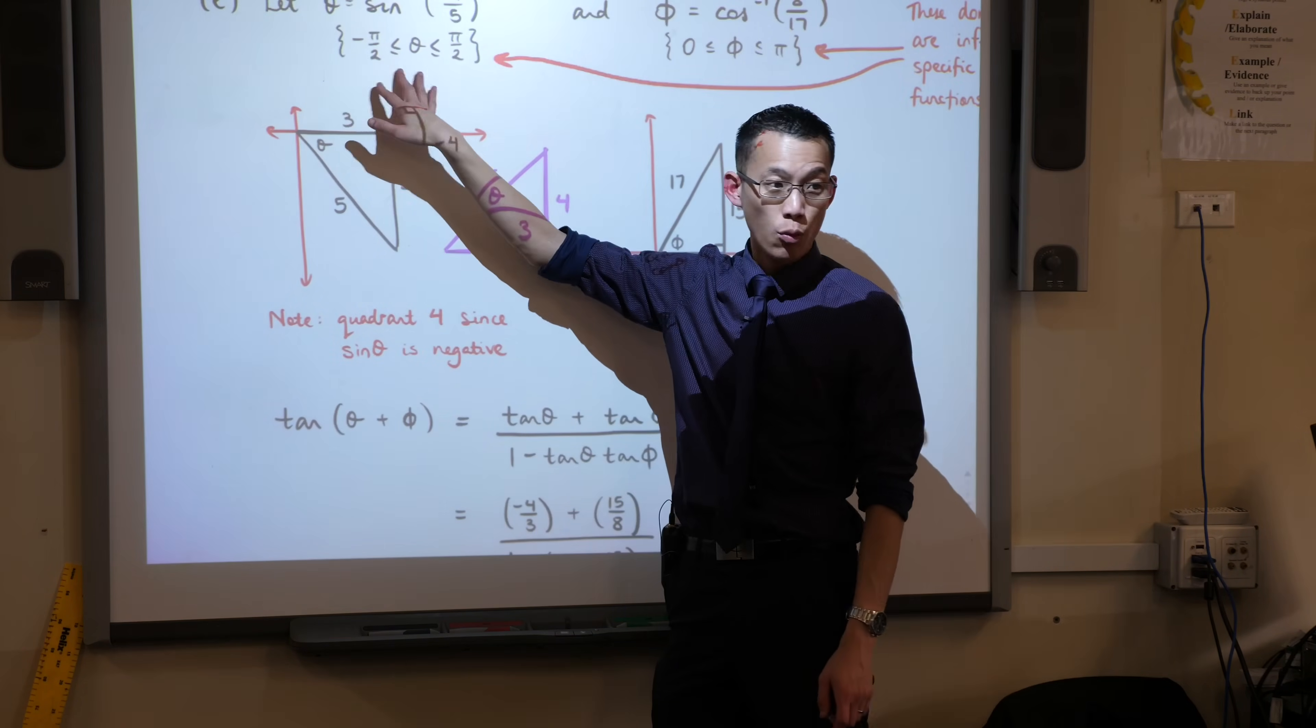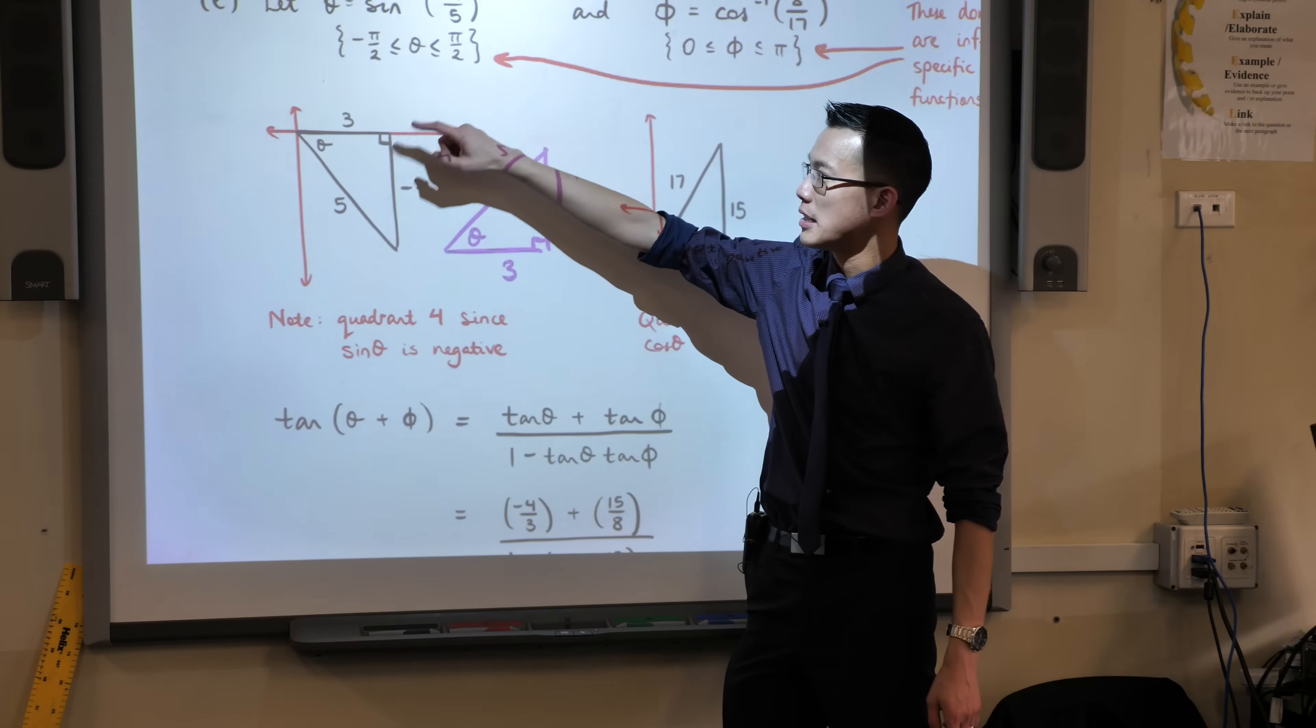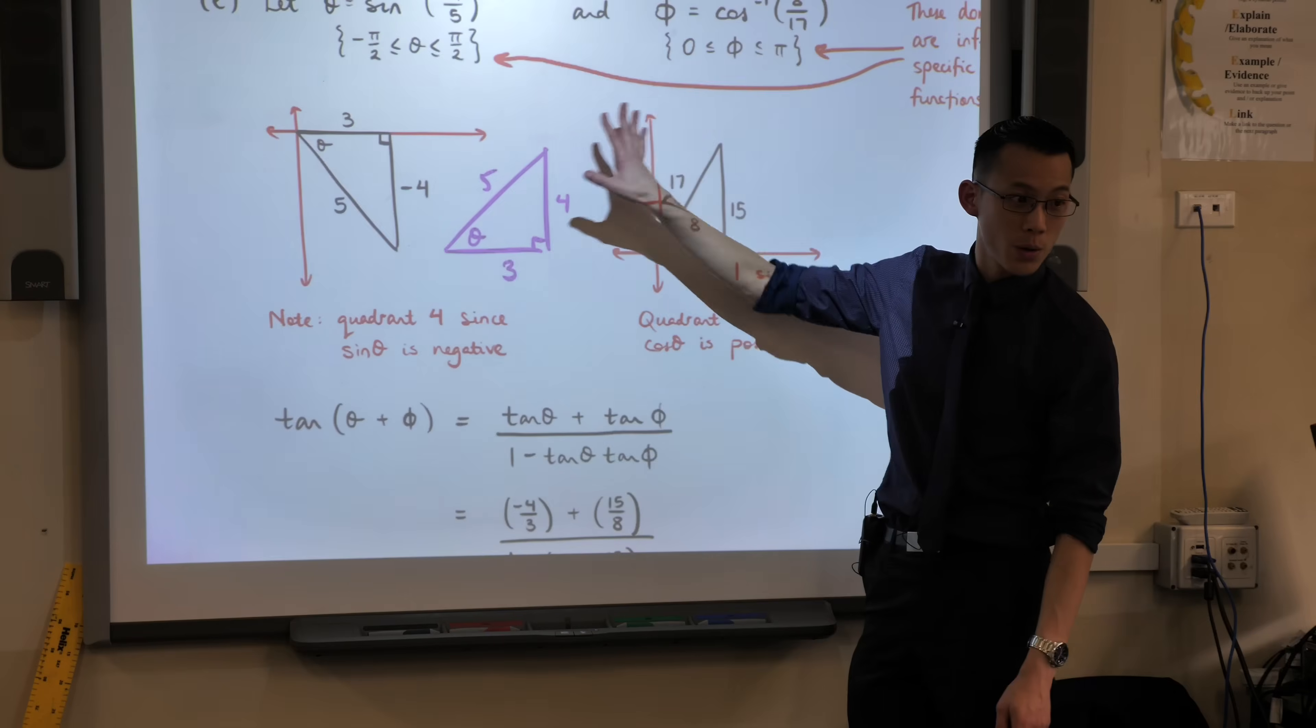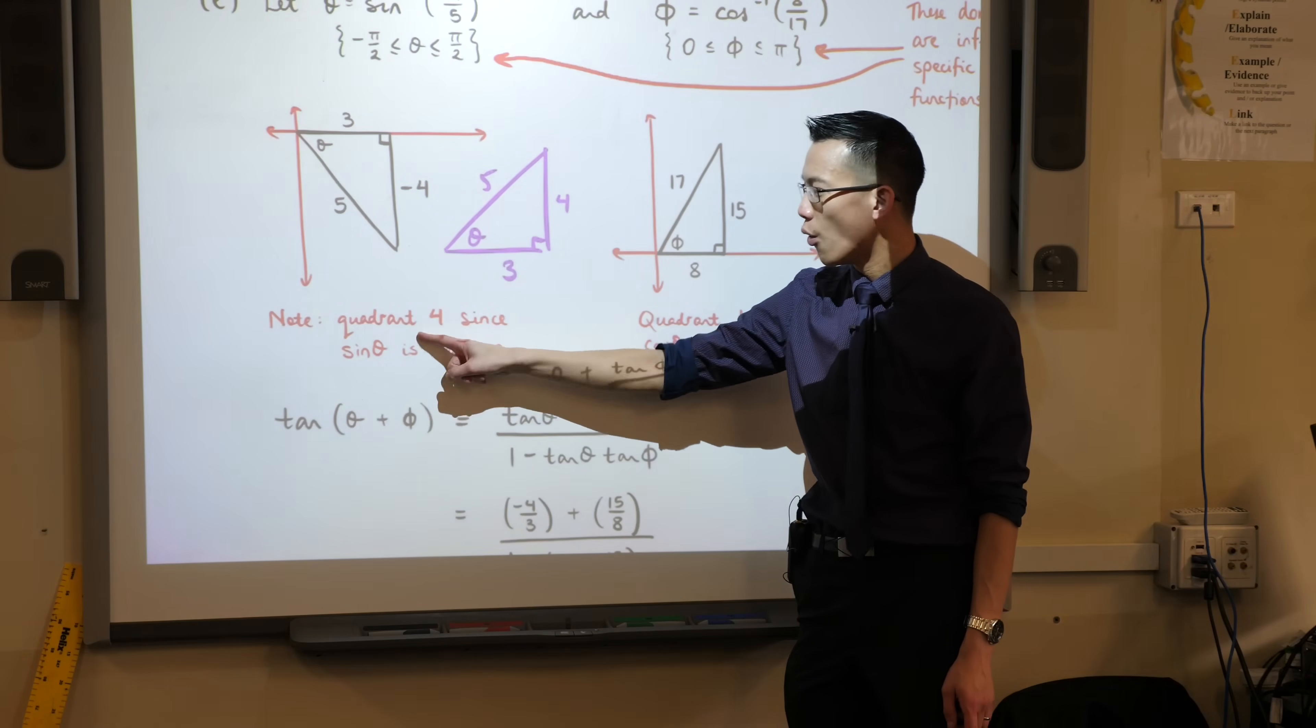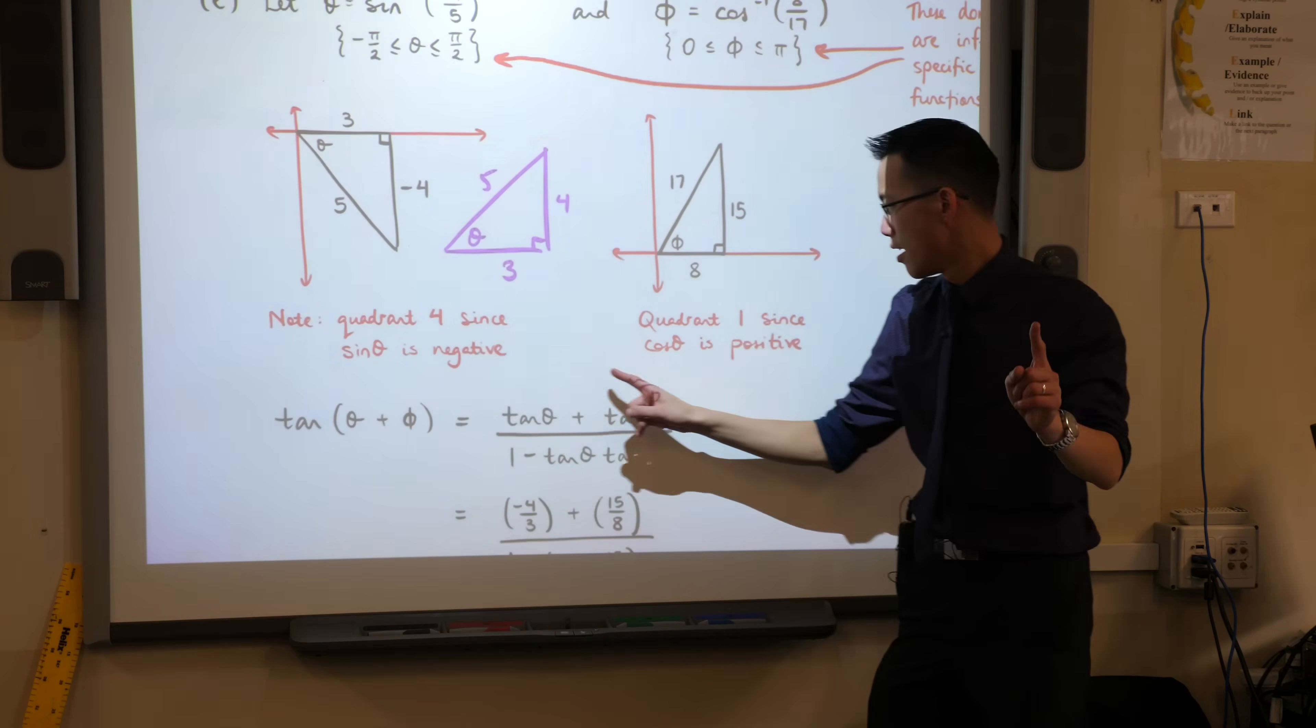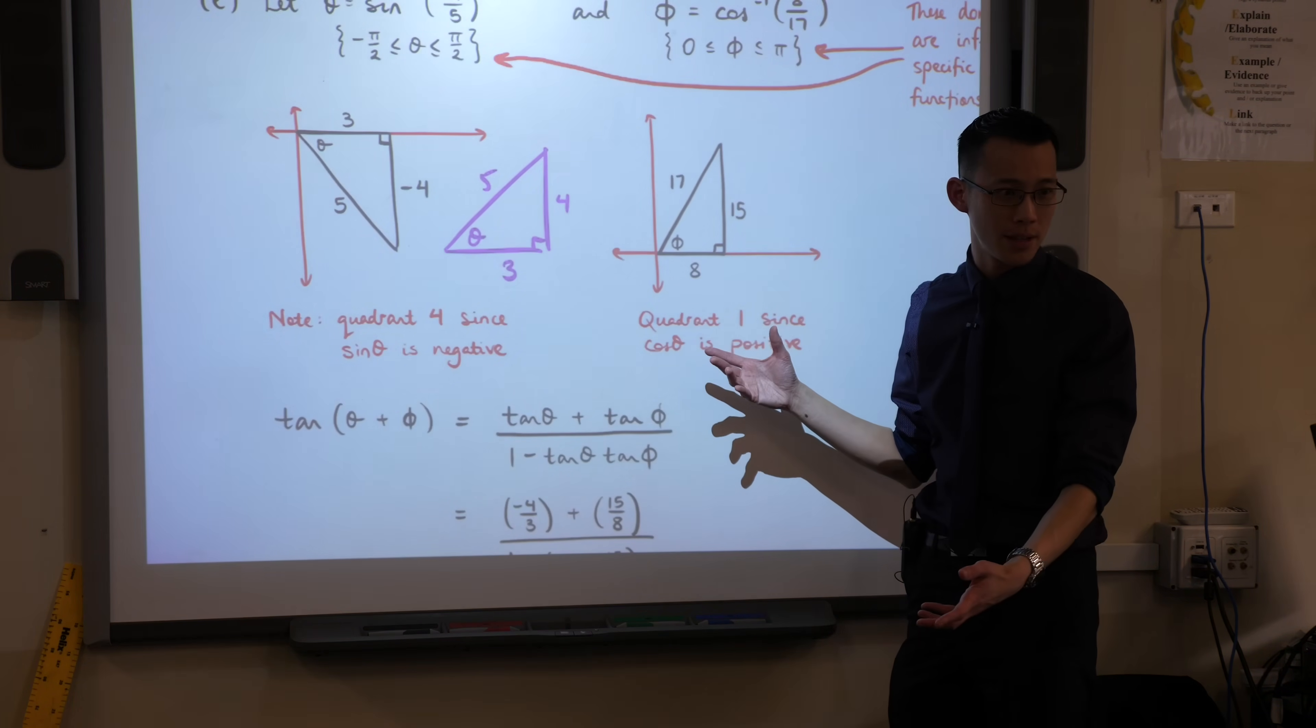So, I would encourage you to draw this within the context of the quadrants, right? Negative pi on 2 to pi on 2 means you're in quadrant 4, quadrant 1. This guy over here could be quadrant 1, quadrant 2. But then you can say, oh, wait, but sin is negative. So, that's the fourth quadrant, not the first. Oh, wait. Cos is positive. That can't be the second quadrant. It must be the first. Does that make sense?